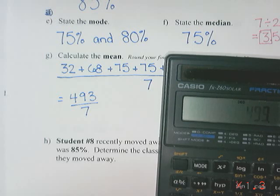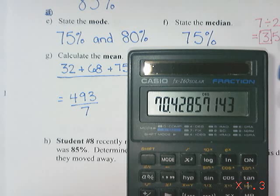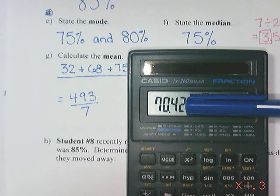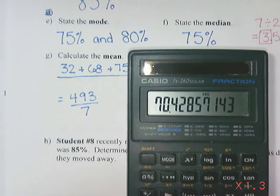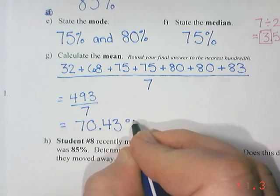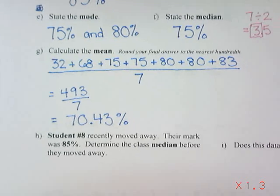The last thing is to divide by 7, which gives 70.42857143. I need to round to the nearest hundredth — two numbers after the decimal — so that's 70.42. I look at the next digit, which is 8, meaning we are closer to 70.43. So the average, or mean, is 70.43.